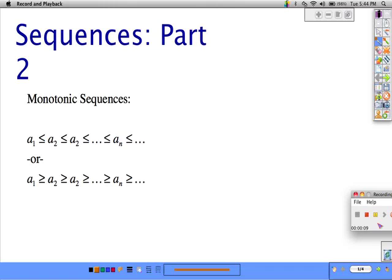We start off looking at what a monotonic sequence is. What that means is either the sequence terms are always going up or they're always going down. Monotonic meaning always going one direction.